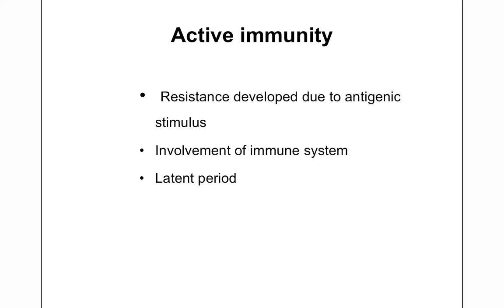A latent period is observed in active immunity. When the antigen enters the body, antibodies or sensitized cells are not immediately produced — some time is required for their appearance. This period required for activation of the immune system is referred to as the latent period. When active immunity is actually acquired, there is always a latent period when the antigen enters for the first time.